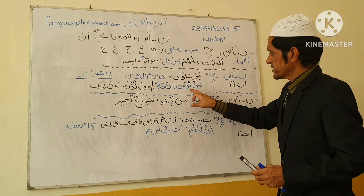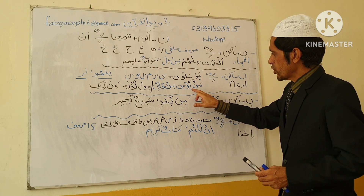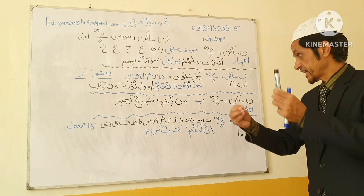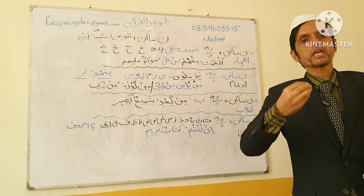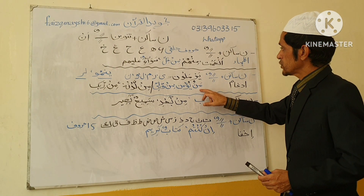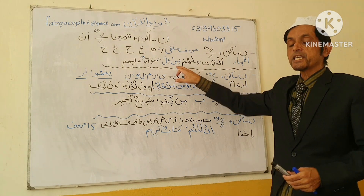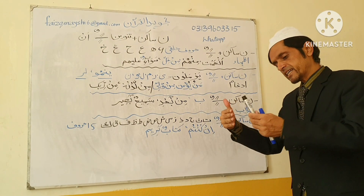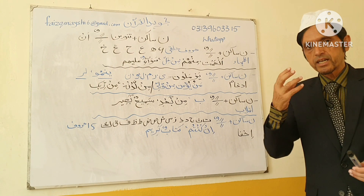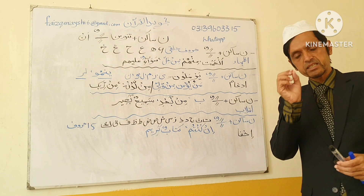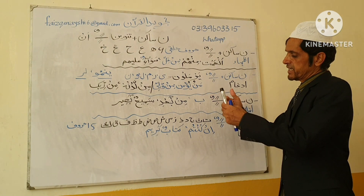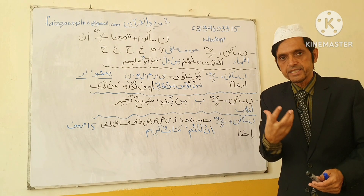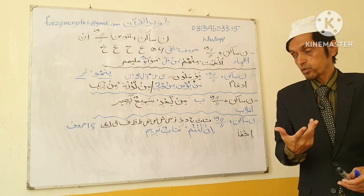When one of the Yarmaloon letters comes after Noon Saakin, we make Idgham. For example: 'Myo Amino' — here is Noon Saakin before Ya, so Noon is entered into Ya. Compare with 'Min Ghilin' — there the Noon is expressed (Izhar). But in 'Myo Amino,' Noon is articulated very slightly and entered into Ya — only the Ya sound is prominent: 'Myo Amino.' Likewise: 'Min Walliyin' — Noon before Wao, Idgham.